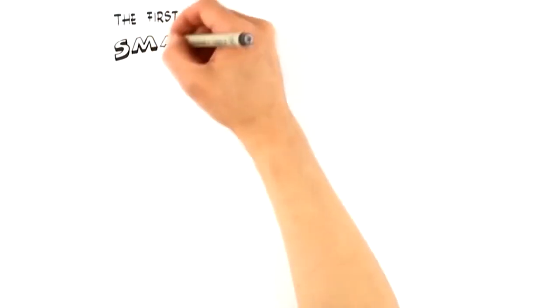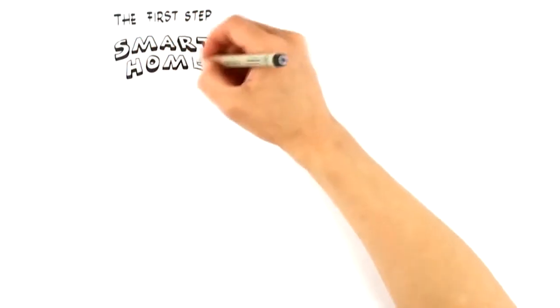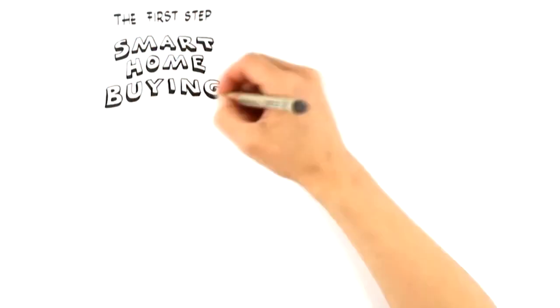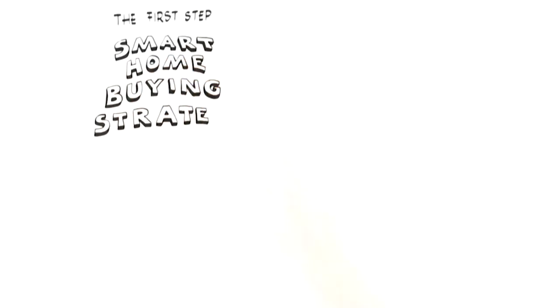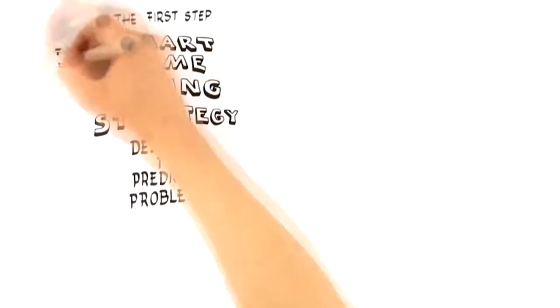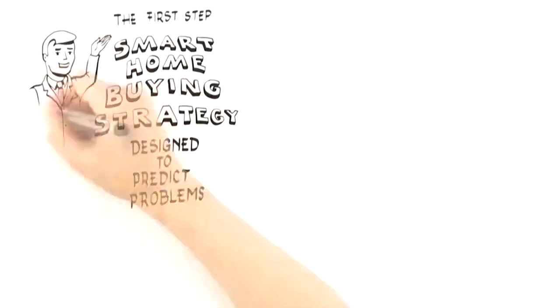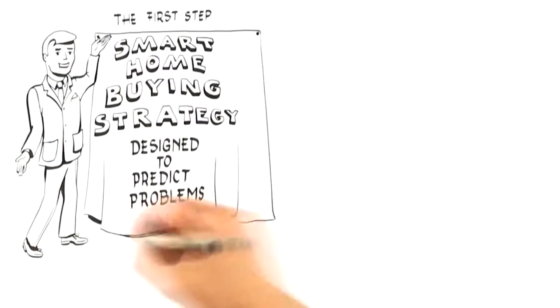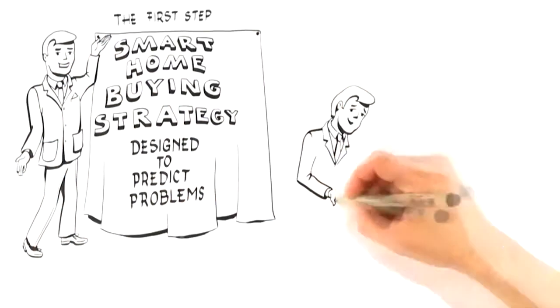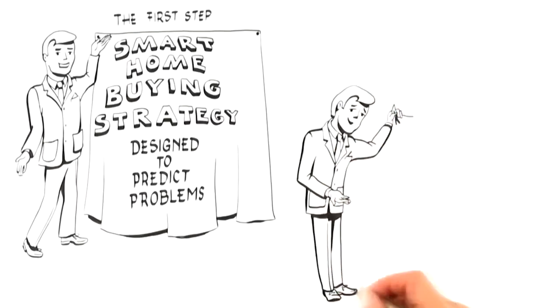The first step to gaining this advantage starts with having a smart home buying strategy. Like any plan or strategy, it is designed to predict problems. In this case, ones that stand in the way of you finding and buying your perfect home. Unfortunately, most buyers don't know they have this option and start the buying process completely wrong.